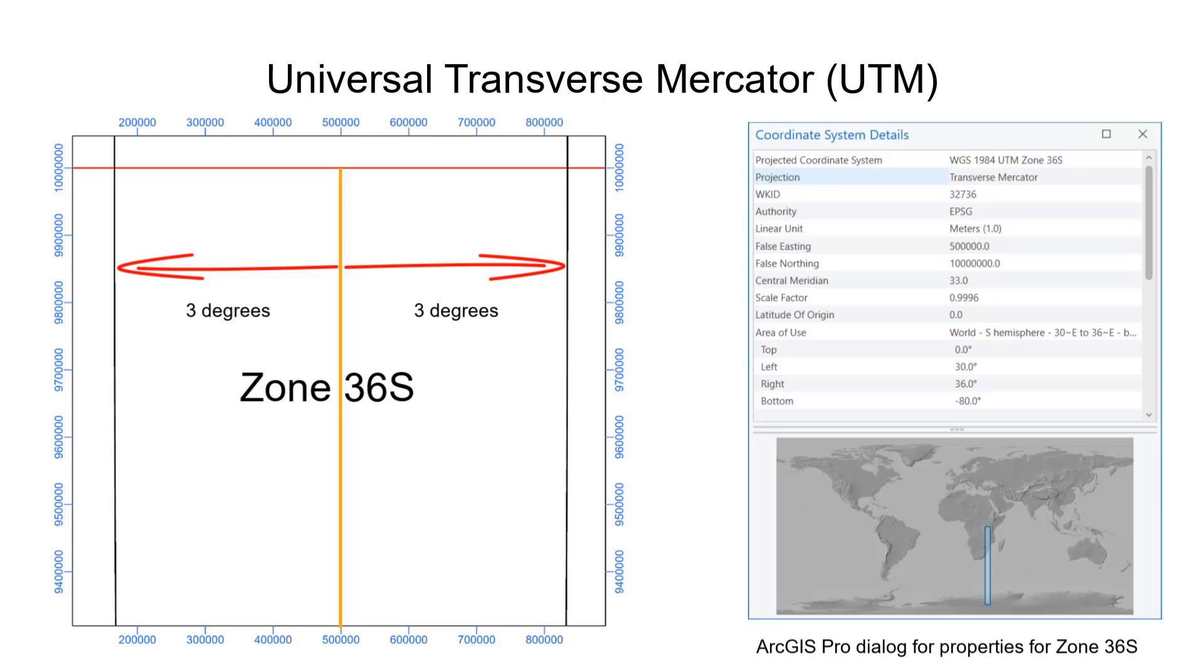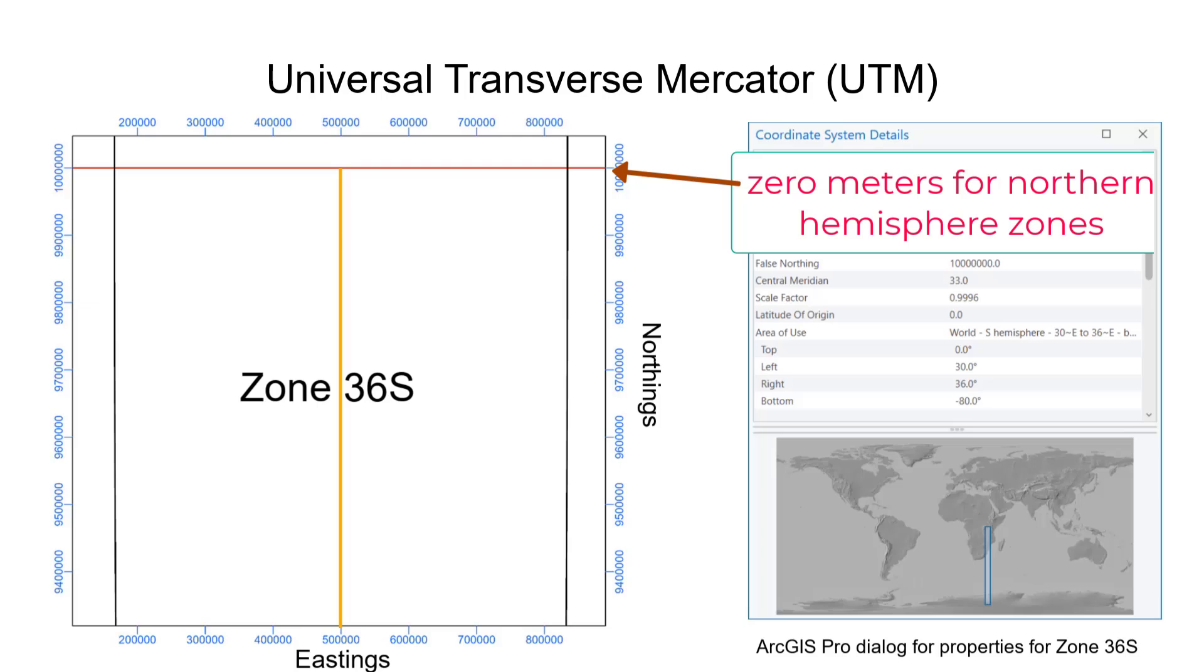In each zone, coordinates are measured in metres north and east and are therefore called northings and eastings. For northern hemisphere zones, the northing is the distance in metres from the equator.